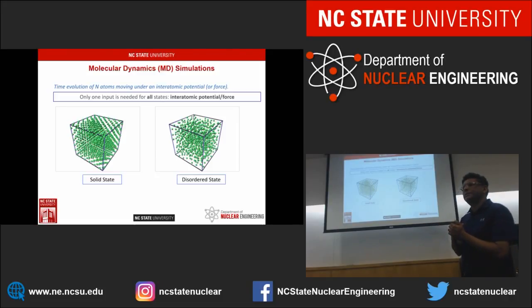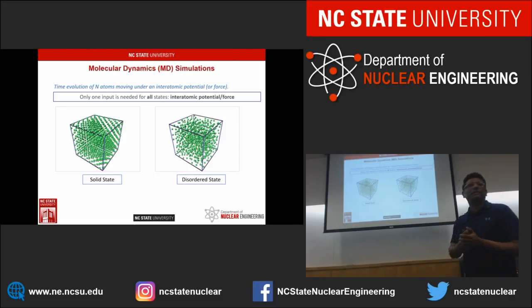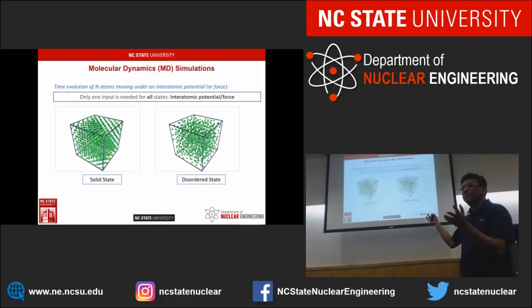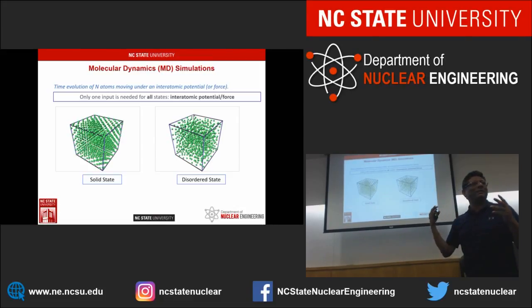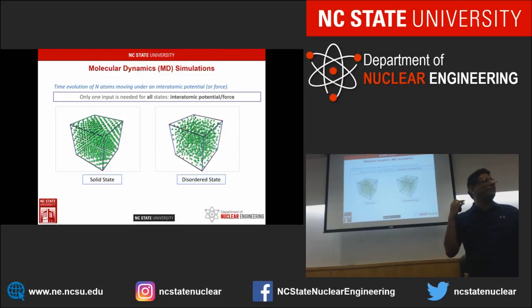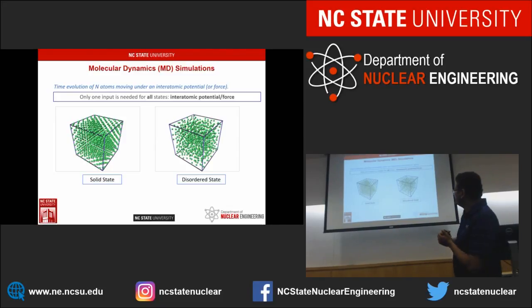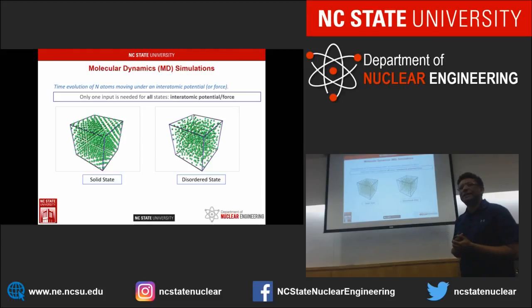There are limitations too. We cannot study a huge system with billions and billions of atoms — we can study millions of atoms, but certainly not Avogadro-type numbers. But we can get very useful information and compute properties.